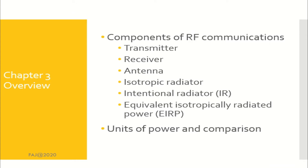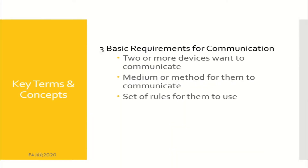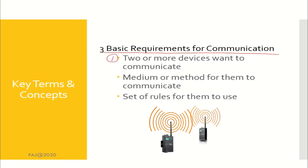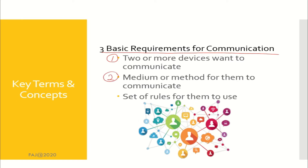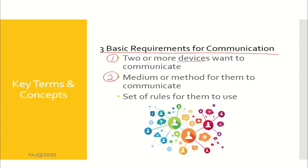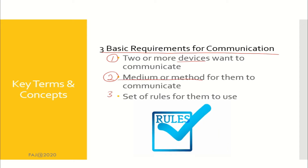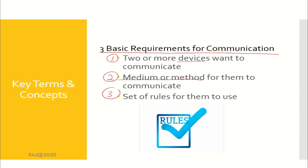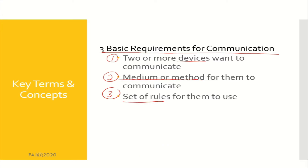In this chapter you will learn about the following. Start with three basic requirements for communication. The first one is two or more devices want to communicate. Second, make sure there is a medium or method for them to communicate. And the last one, a set of rules for them to use. Try to remember all these three basic requirements.